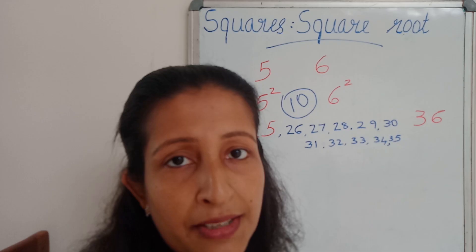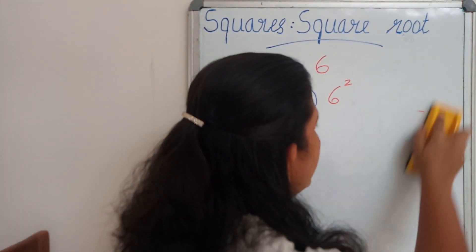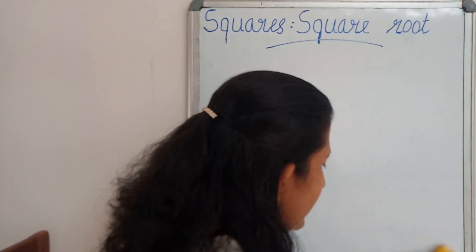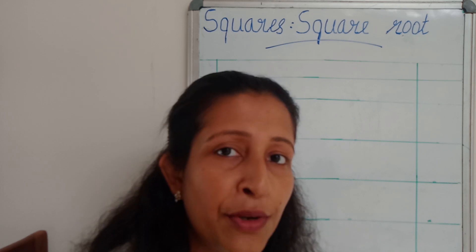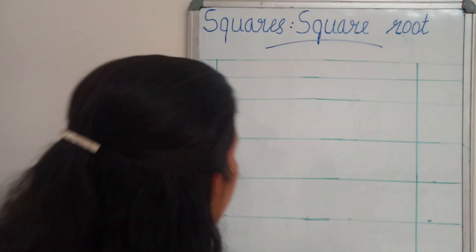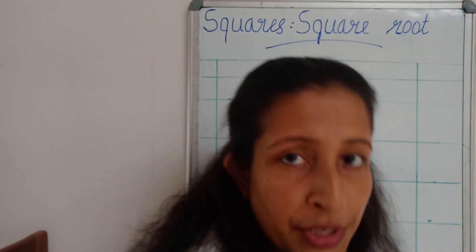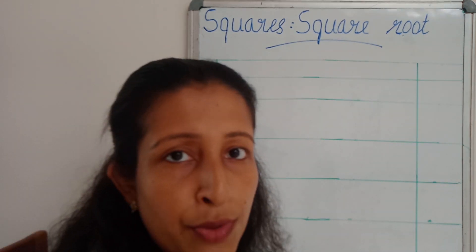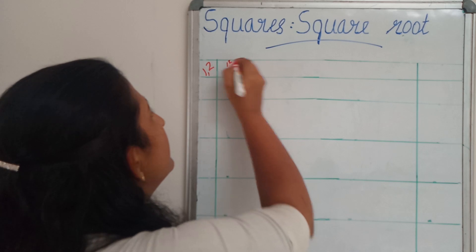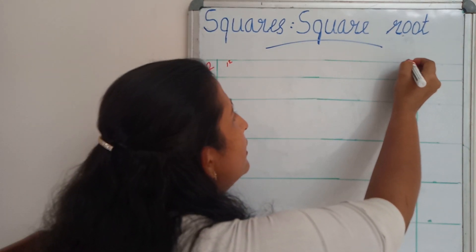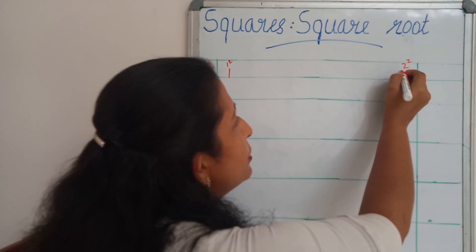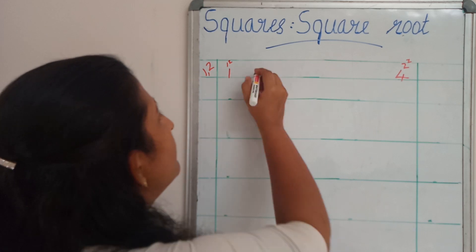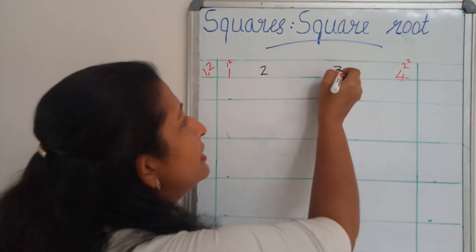This is our question. To make a property, we want clear evidence. So we are going to find out what is the property. I am taking two consecutive natural numbers: 1 and 2. I am going to find the squares of each number — 1 square, then 2 square. 1 square is 1, 2 square is 4. What are the numbers in between 1 and 4? 2 and 3.